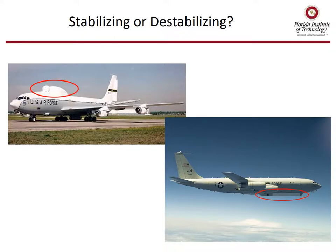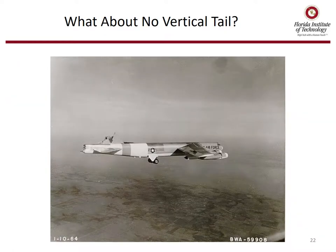In summary, the stability derivative C_n beta — called weathervane or weathercock stability — needs to be positive. It's the primary directional stability derivative. The other derivatives can have the signs shown, but ultimately C_n beta is the overriding stability derivative. Things that can generate a side force in a sideslip condition that are ahead of the CG are destabilizing. Without a vertical tail, directional control would be very difficult.